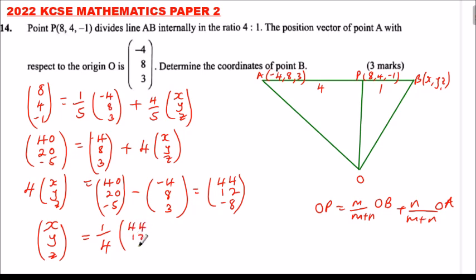When you open the bracket, a quarter of 44 is 11, a quarter of 12 is 3, and a quarter of minus 8 is minus 2.